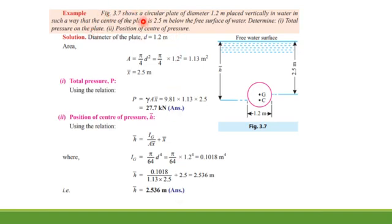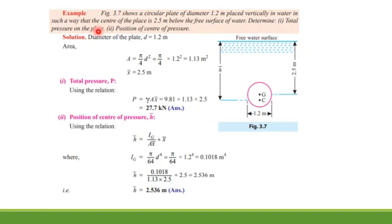In this example, the figure shows a circular plate of diameter 1.2 meters placed vertically in water such that the center of the plate is 2.5 meters below the free surface of water. Determine the total pressure on the plate and the position of the center of pressure.